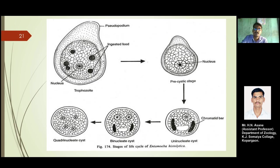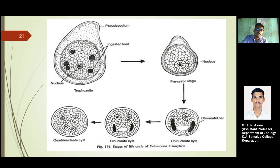The quadranucleated cyst invades into the submucosal layer of the large intestine, producing lesions there. While this is occurring, the quadranucleated cyst ruptures and distributes as eight daughter cells. Those eight daughter cells develop again into trophozoite stages, which are then passed out by means of feces. The excreted forms are mature enough to find a new host, and the life cycle continues.